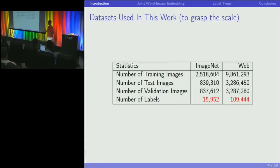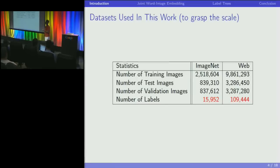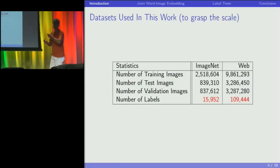In parallel, I had access to a much bigger dataset — about 15 million images taken from our image search engine. People type queries, get images, sometimes click on them, and I aggregate that behavior. If many people type a query and click on an image, I assume that image is about that query. If only one person does it, it means nothing, but if hundreds of people agree, there must be something. That's how I got that data.